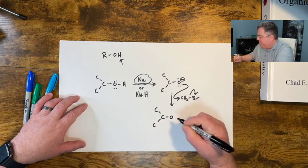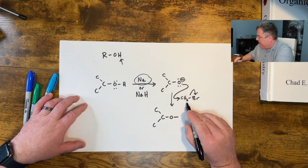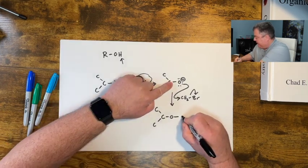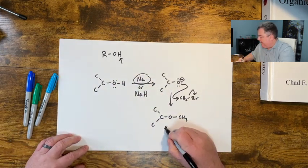So now my isopropoxide, these are alkoxides, now has a methyl group attached to the oxygen. And we can make an ether.